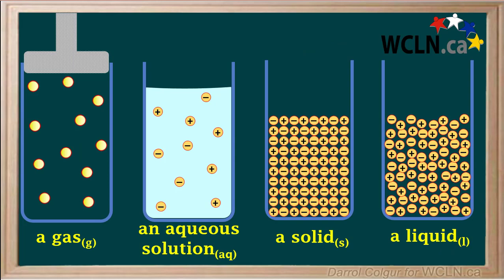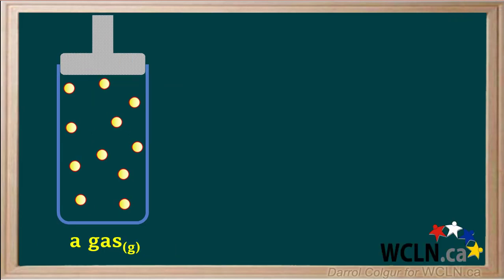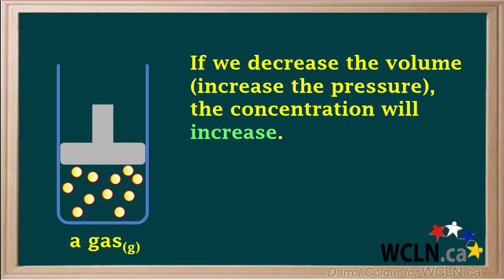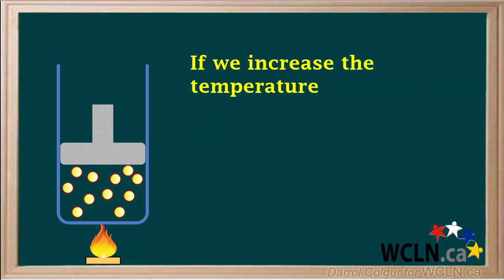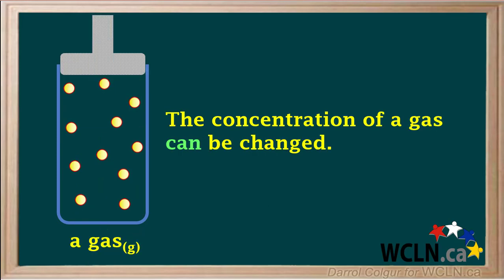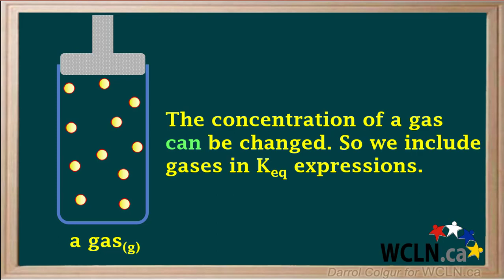At this point, we'll look at models for four different phases of matter: a gas with subscript G, an aqueous solution with subscript Aq, a solid with subscript S, and a liquid with subscript L. We'll see which of these phases can have variable concentrations. Starting with our model for a gas, if we decrease the volume — which is the same as increasing the pressure — the gas molecules move closer together, so the concentration will increase. If we have constant pressure, like atmospheric pressure, and we increase the temperature, the gas will expand and the concentration will decrease. We conclude that the concentration of a gas can be changed; therefore, we always include gases in Keq expressions.